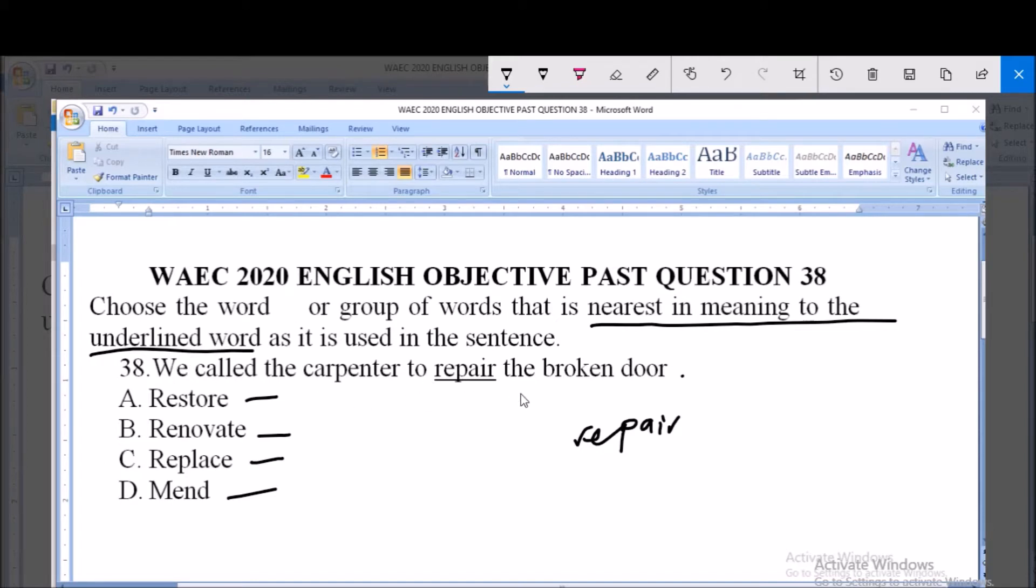Option A says restore. Restore cannot function in this sentence, but when you restore something it means that you are giving it its original outlook. When you restore, you return it to its original outlook.